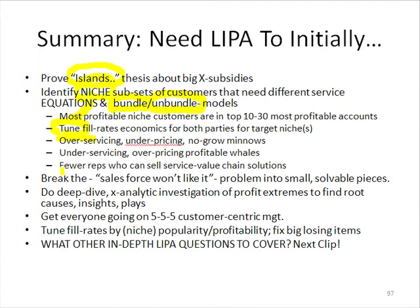We'll find out that we have too many reps making too many calls on what I call B and C — lower-level customers that can't really support the outside cost of a rep anymore. We'll come across the issue that the sales force won't like any of this. But with line item profit analytics, we can take a general problem — the sales force won't like it — and break it into smaller pieces: look at each salesperson, each territory, and solve the pieces one at a time.